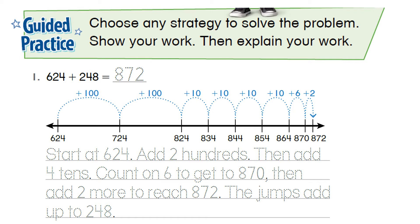This is just an example of how to explain the work. So what the problem is, is 624 plus 248. This person starts at 624, and then adds the 200s. And the reason behind that is because there's a 2 in the hundreds place.